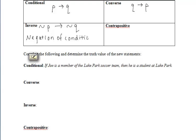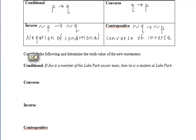The contrapositive is 'if not Q, then not P.' You could think of the contrapositive as the converse of the inverse — so we take the converse of our inverse to get our contrapositive.